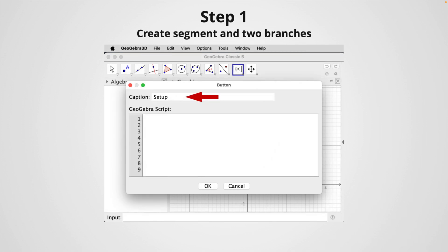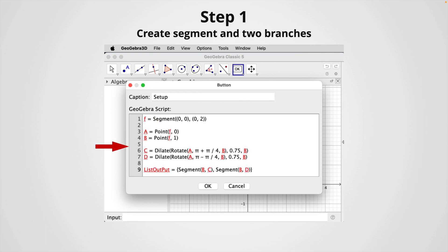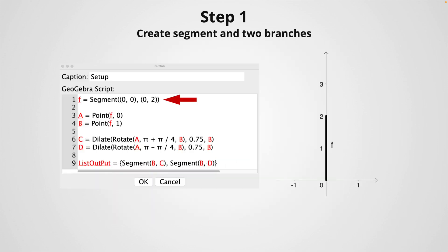In the caption input box, I like to type setup, but you can use any other caption. Here I already have the GeoGebra script. Essentially, this is a sequence of commands that are going to be executed one after each other. For example, in line number one, this indicates that we are going to create a segment from point (0,0) to point (0,2).